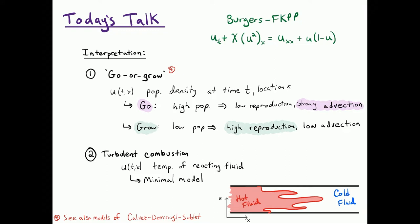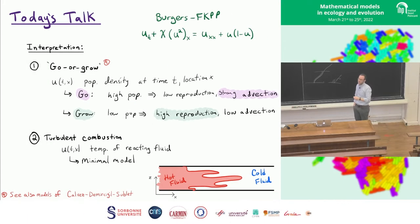So you, if you have a small population, you're not spending your time really running, you're spending your time reproducing. If you have a high population, you have essentially no reproduction, but you're getting, you have a big advection that's pushing you to sort of new territory.